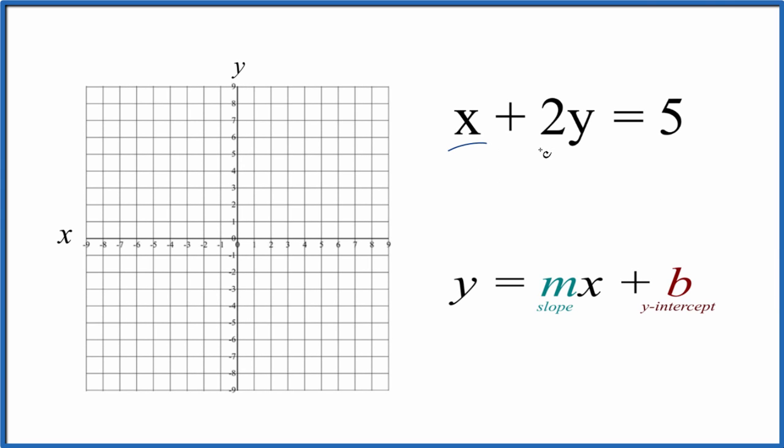Let's graph the linear equation x plus 2y equals 5. We use slope-intercept form to do that.